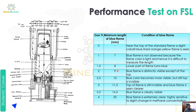At 2% gas, the minimum blue flame length is 9 mm, and the flame is distinctly visible except at the top — meaning the blue flame appears in the lower and middle parts but the top is not visible. At 2.5% gas, the minimum length of blue flame is 10 mm; the blue color becomes more visible but the top is still invisible.